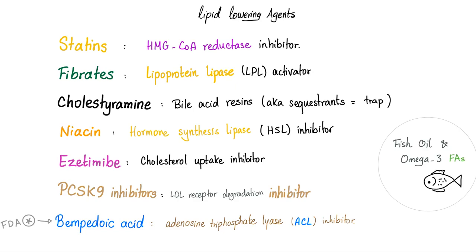The lipid-lowering agents are: statins, fibrates, cholestyramine, niacin, ezetimibe, PCSK9 inhibitors (very potent but very expensive), and bempidoic acid — literally approved by the FDA in 2020.